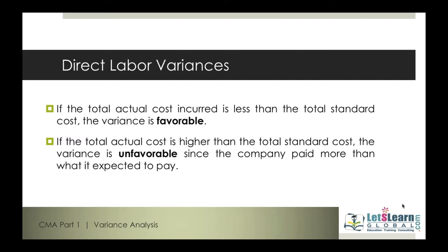When the total cost actually incurred on labor is less than what's supposed to be incurred — which is budgeted — it is called a favorable variance. If the total actual cost on labor incurred is greater than the standard cost we budgeted for direct labor, the variance becomes unfavorable. We need to determine whether this is favorable or unfavorable due to a rate difference, laborer efficiency, or a combination used in a particular task.